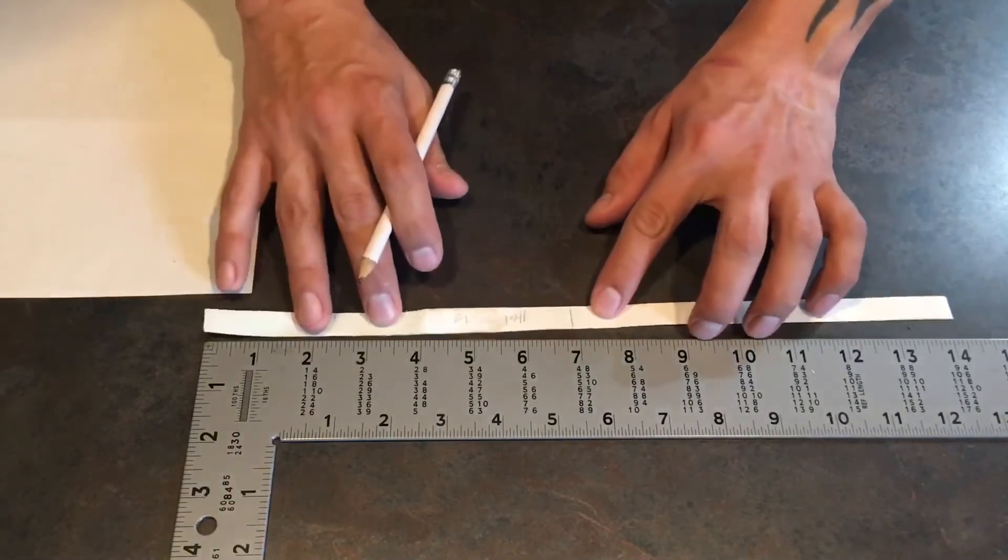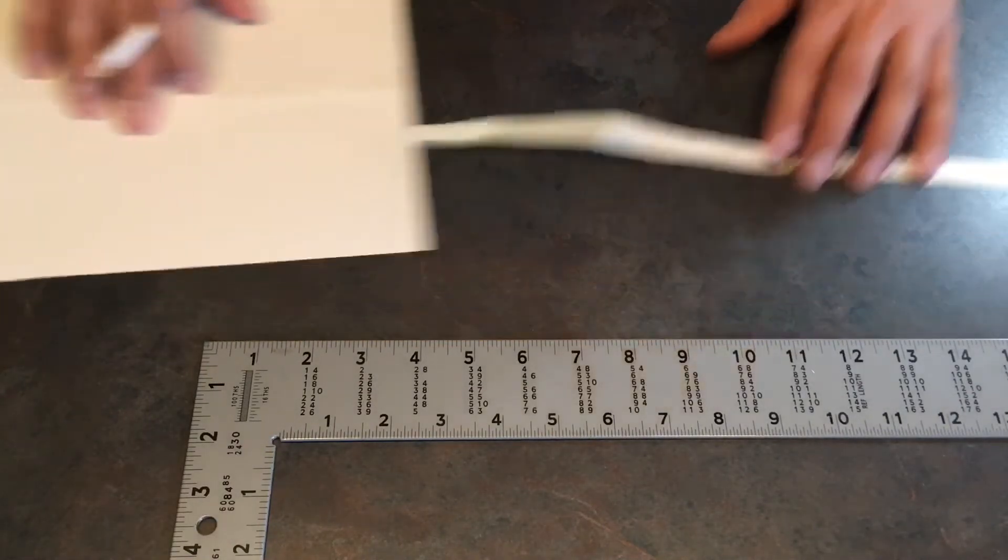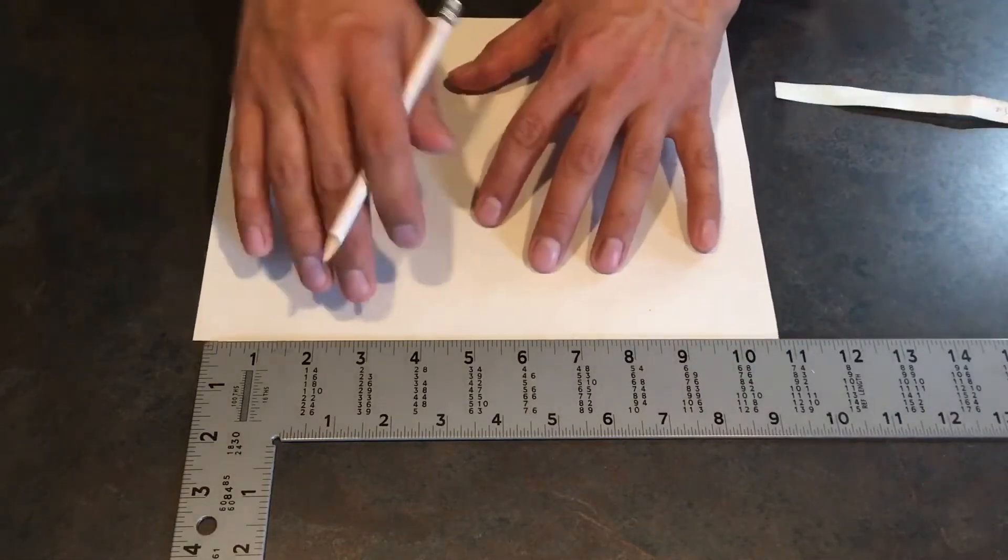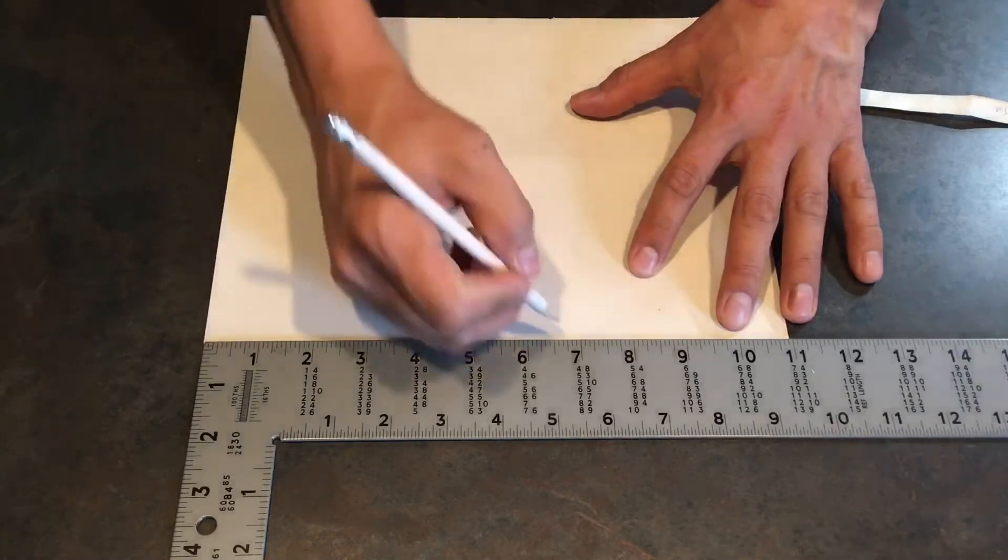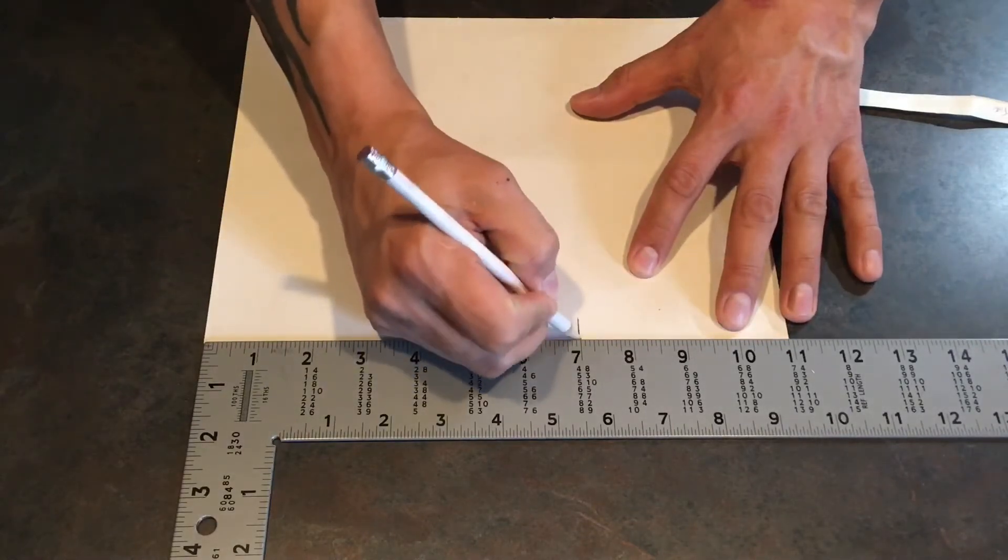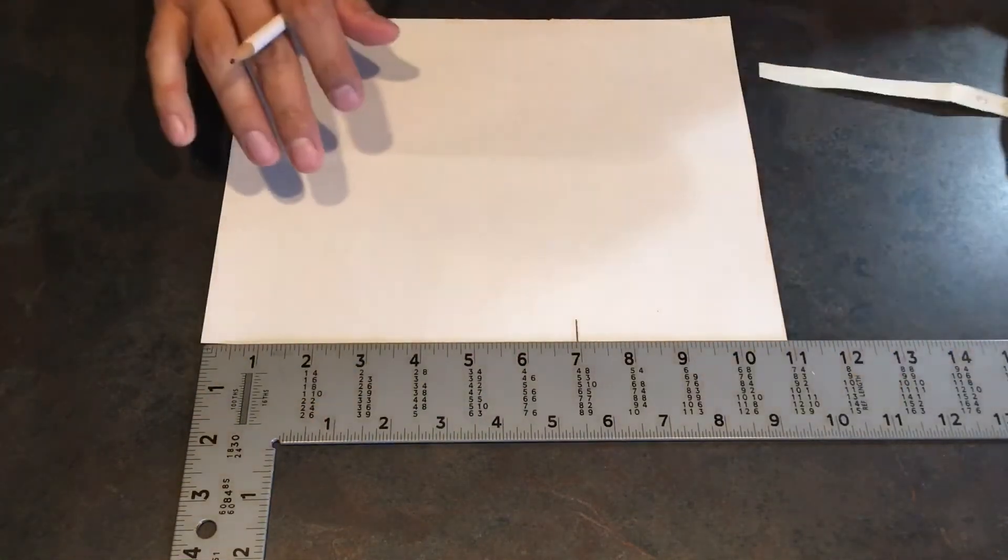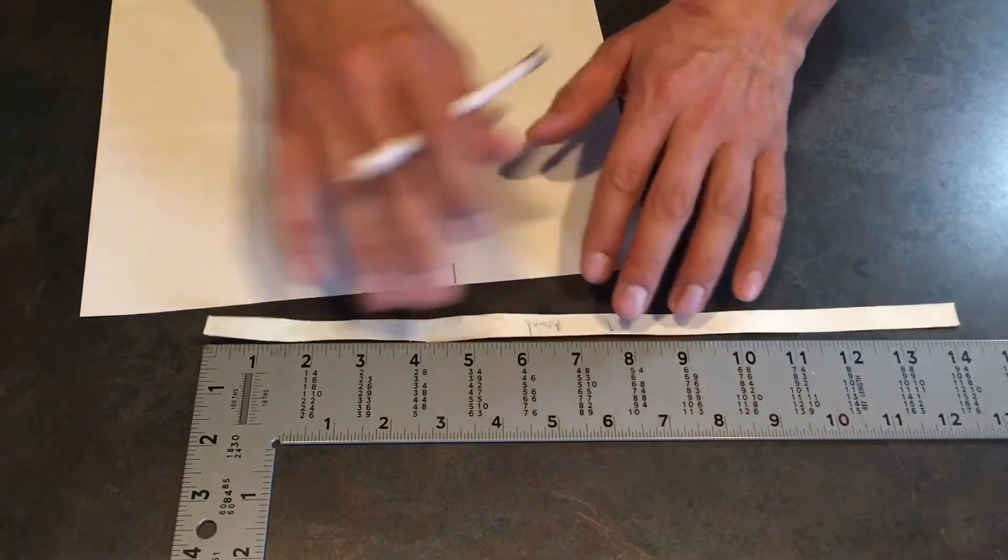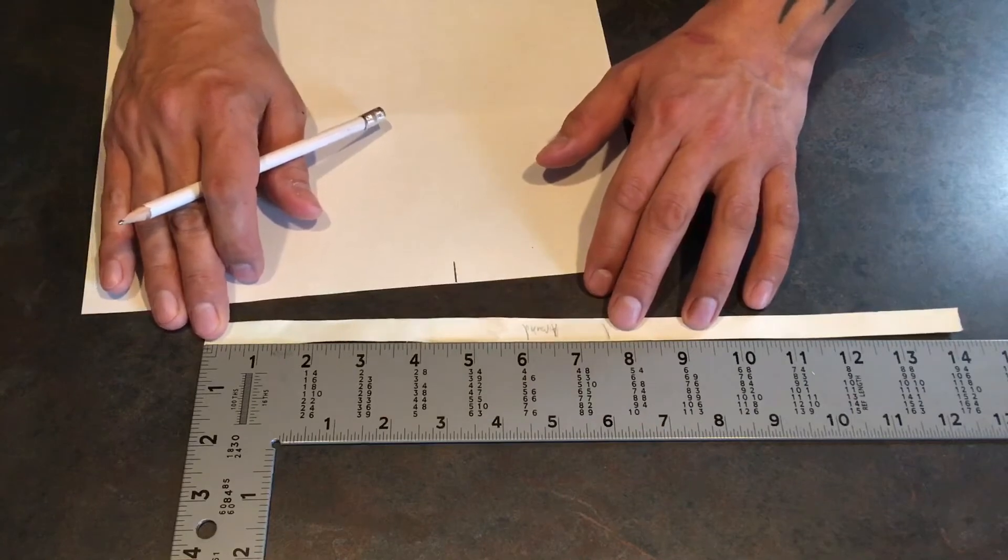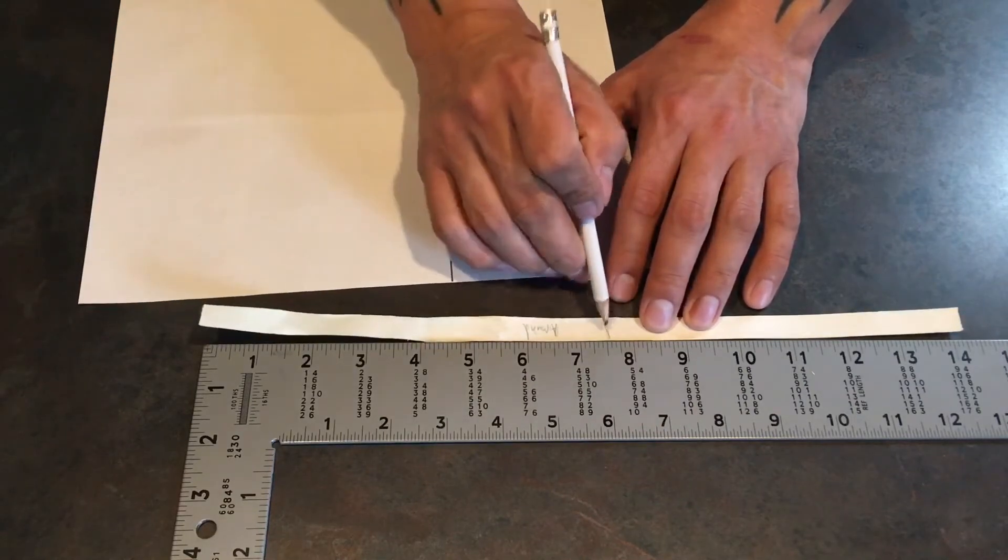Heel to toe is about seven inches. So take your ruler, measure seven inches, right there. Now, for around your foot, it's about seven and a half, but what you're going to do is add a half inch.